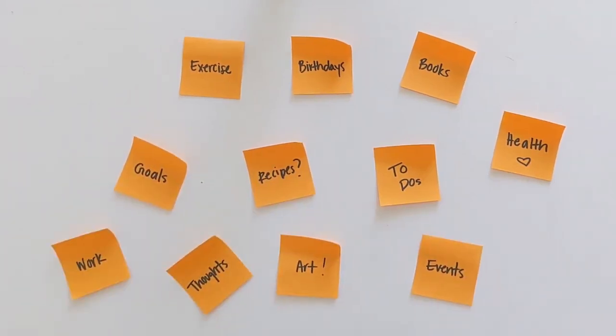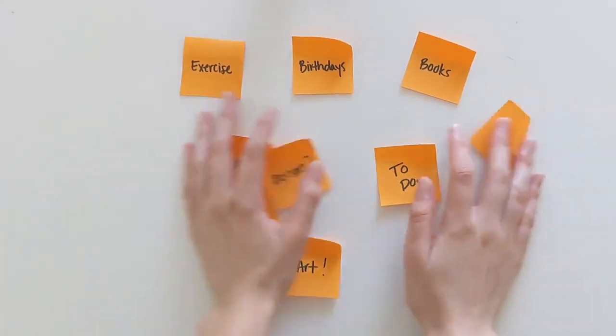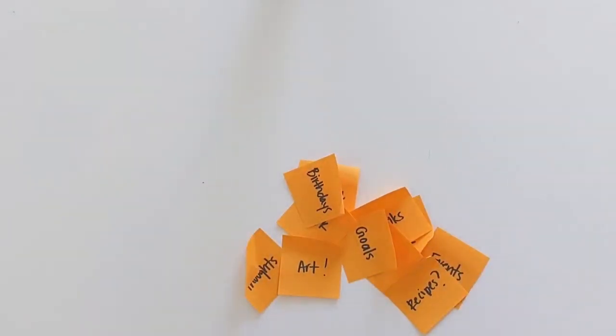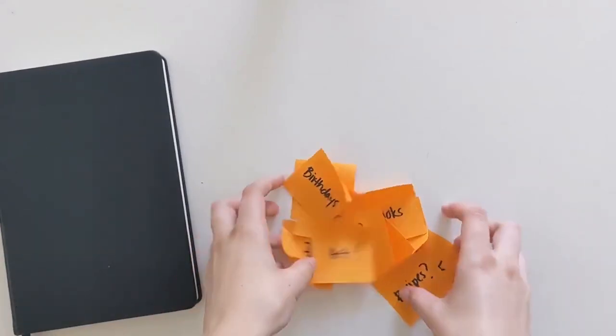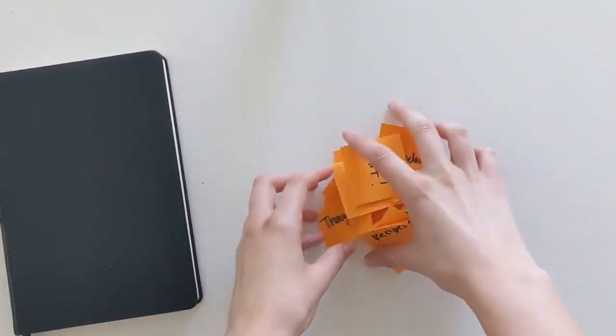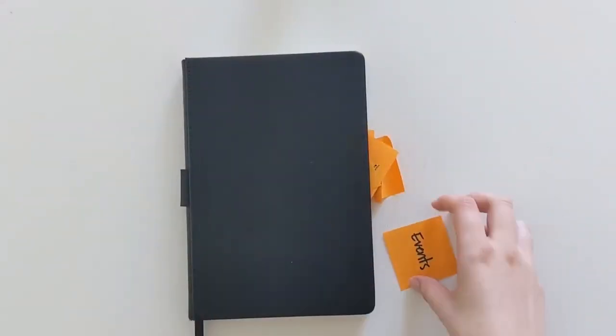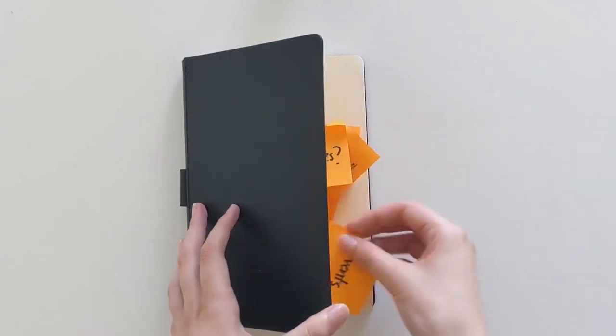Bullet journaling was developed by someone named Ryder Carroll, who wanted a fast, simple, and effective method for keeping track of the day-to-day things in his life. But since then, bullet journaling has evolved into a lot more than that. Anyone can make a bullet journal in whatever style they want.